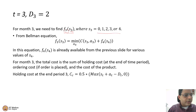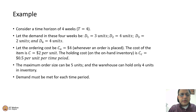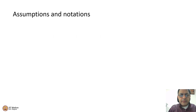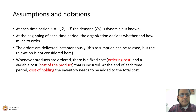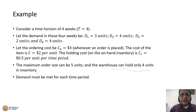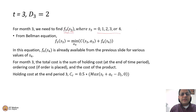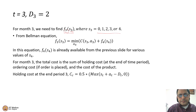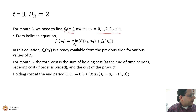Why are these the only admissible values of S3? Because of the warehouse capacity constraint — the warehouse can only hold 4 units of inventory. Therefore, you can only carry a maximum of 4 units from time period 3 to time period 4. You might carry 0, 1, 2, 3, or 4. So those are the admissible values of S3.